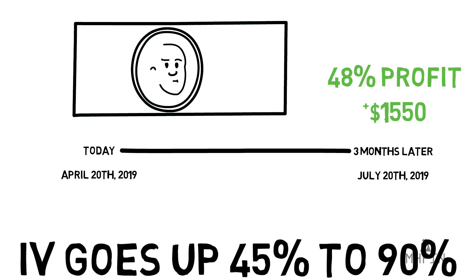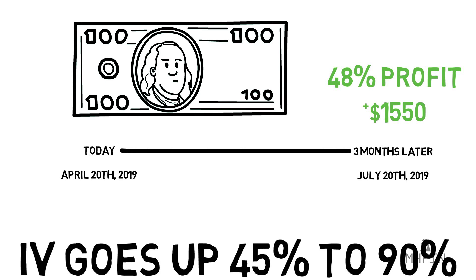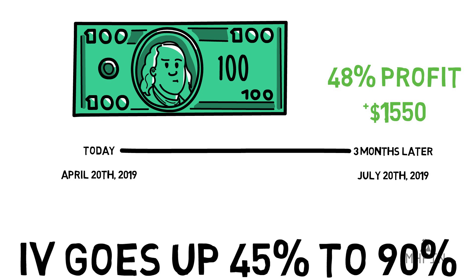The only thing that changed was IV, and it completely changed our outcome. In the first scenario we lost 30% on our investment, while in the second we made nearly 48%. That just goes to show you how sensitive option prices are to implied volatility — it could be the difference between going bust and hitting jackpots. Once again, please look to buy options when IV is low and sell them when IV is high, and make sure you know what high and low mean by looking into the IV percentile statistic.